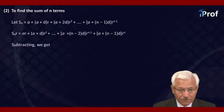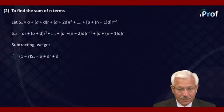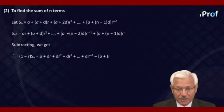Subtracting, we get (1 − r)·S_n equal to a plus d·r plus d·r² plus d·r³ plus so on, plus d·r^(n−1) minus (a + (n−1)d)·r^n.